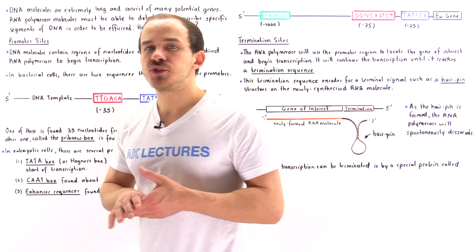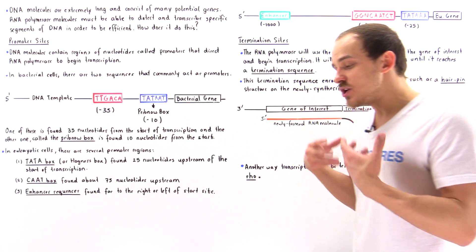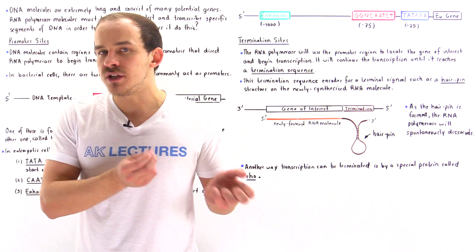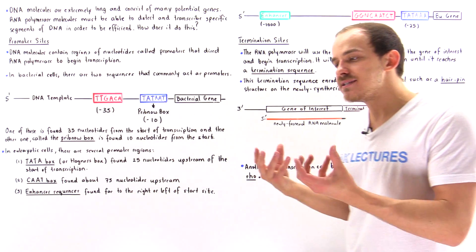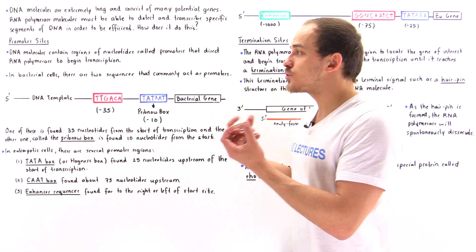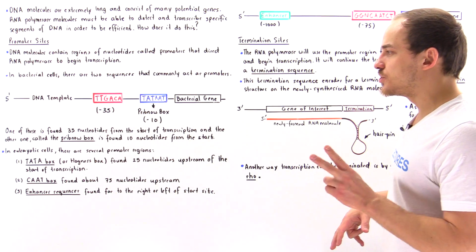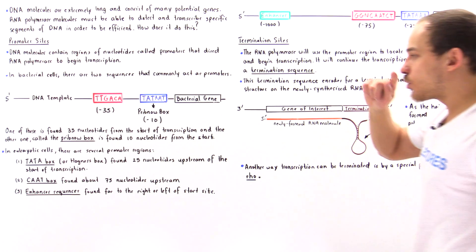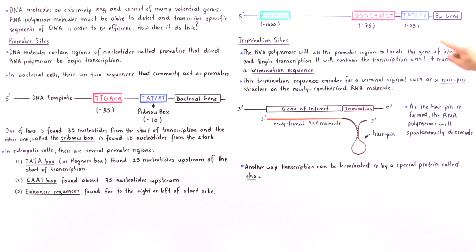Moving on to eukaryotic cells — such as human cells — we also have promoter regions, but we additionally have sections of DNA that play an important role in enhancing the transcription process. We have two important promoter regions; one is known as the TATA box, so named because it has a consensus sequence T-A-T-A-A-A.